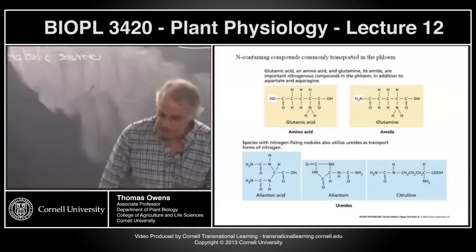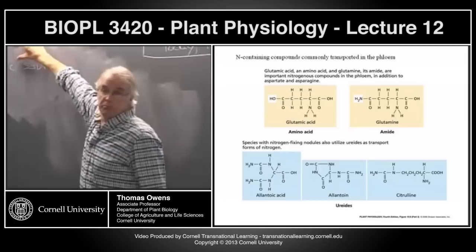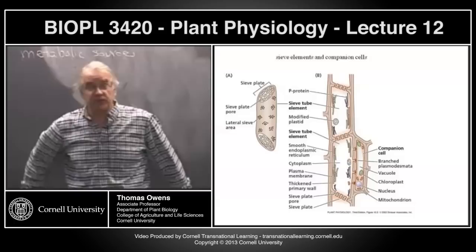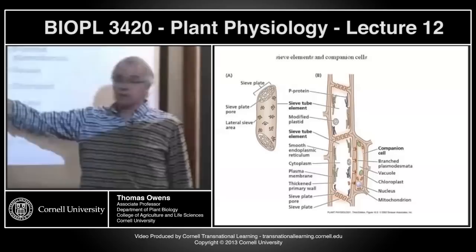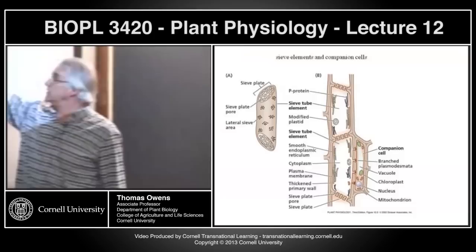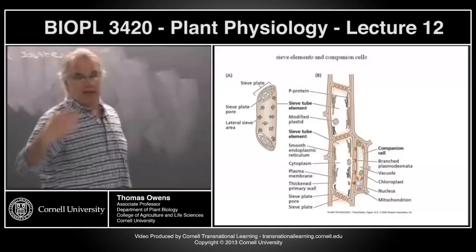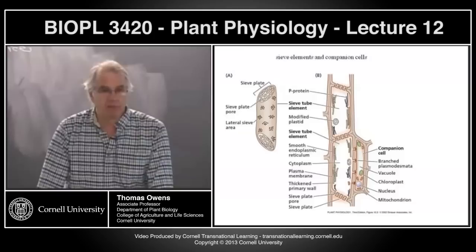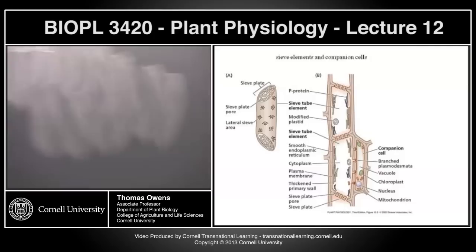Let's think about the plumbing system through which this pressure-driven bulk flow happens. Phloem tissue has four different types of cells; the two important ones are the sieve elements — basically the pipes of the phloem — and the closely associated companion cells. Every sieve element has an associated companion cell. Unlike the xylem, which was dead at maturity, the phloem is alive — but it's fair to say it's barely alive.